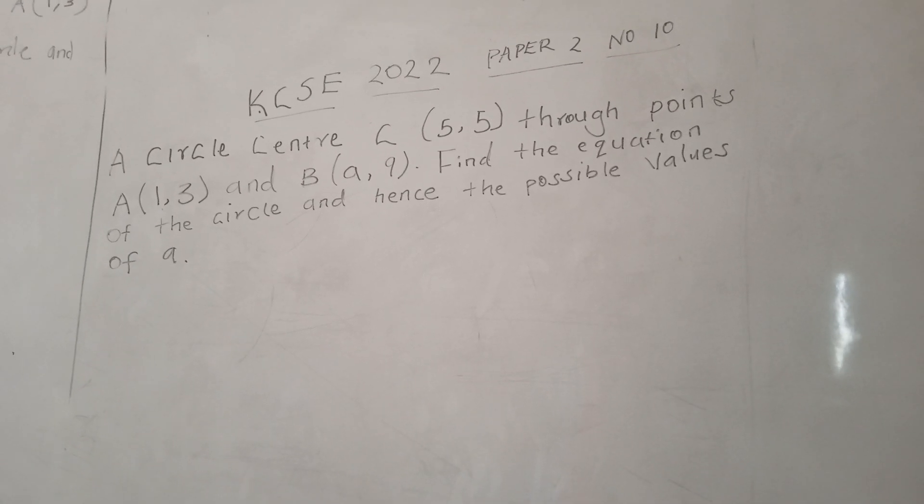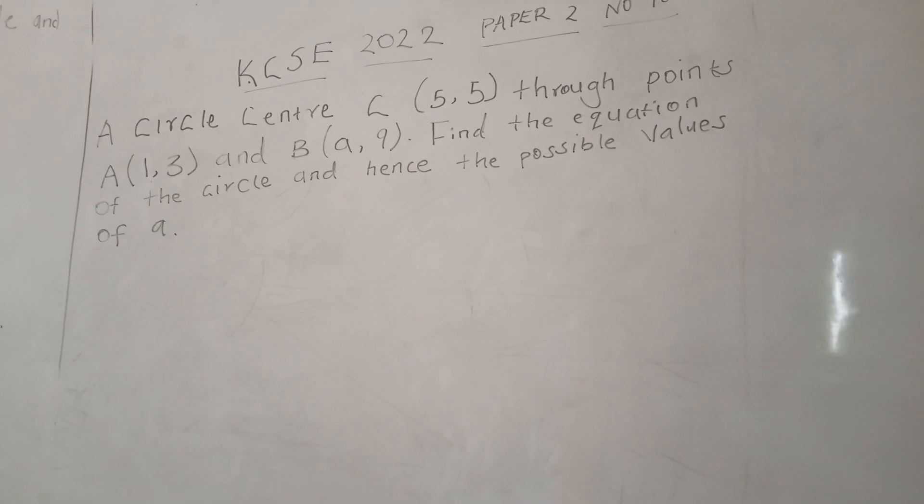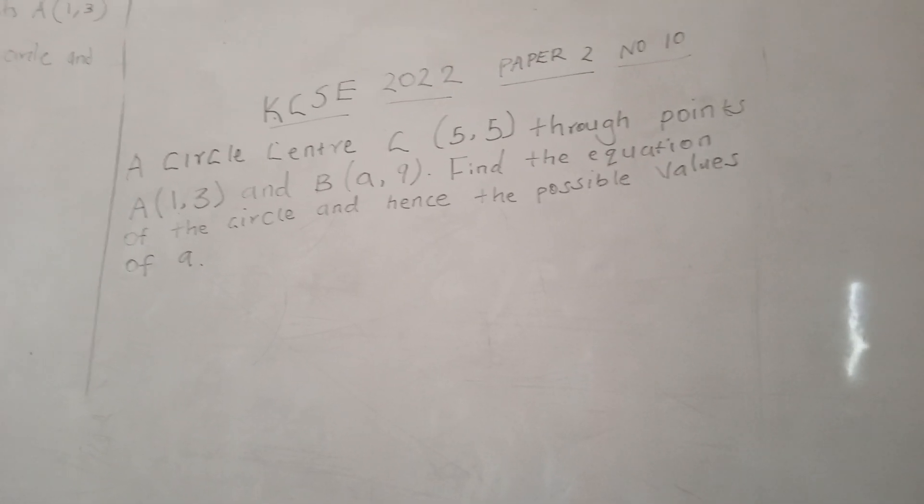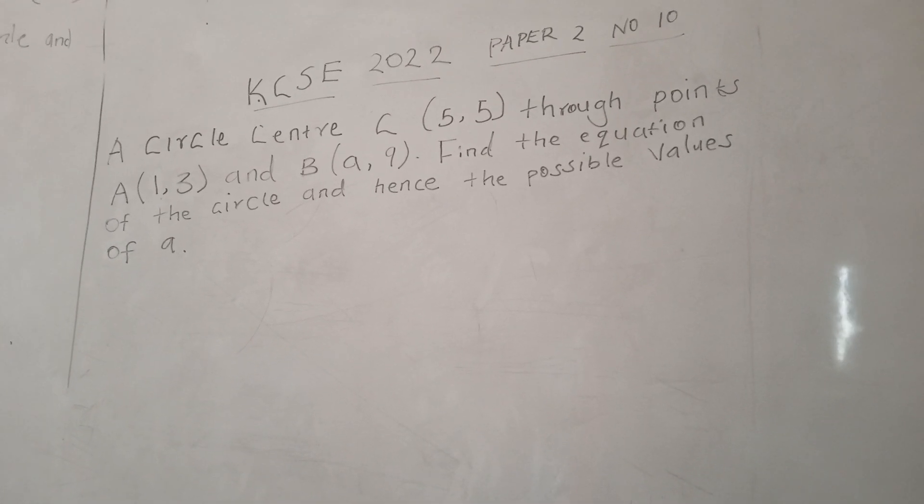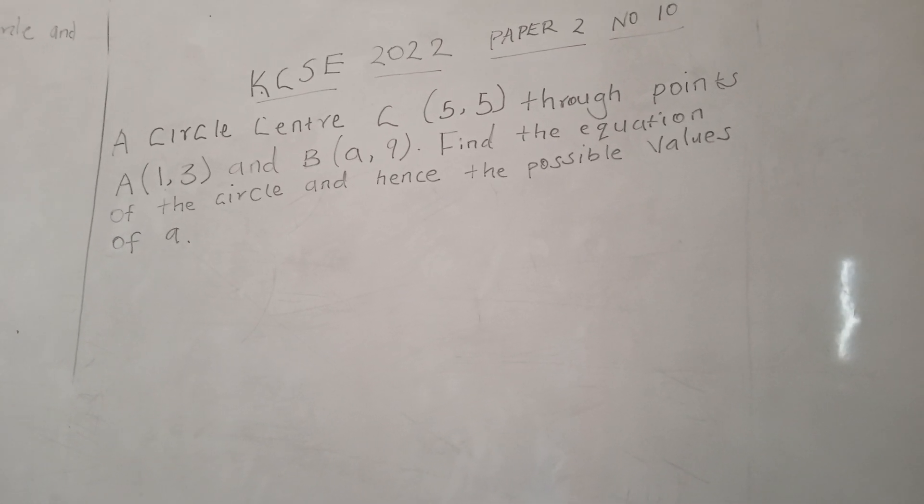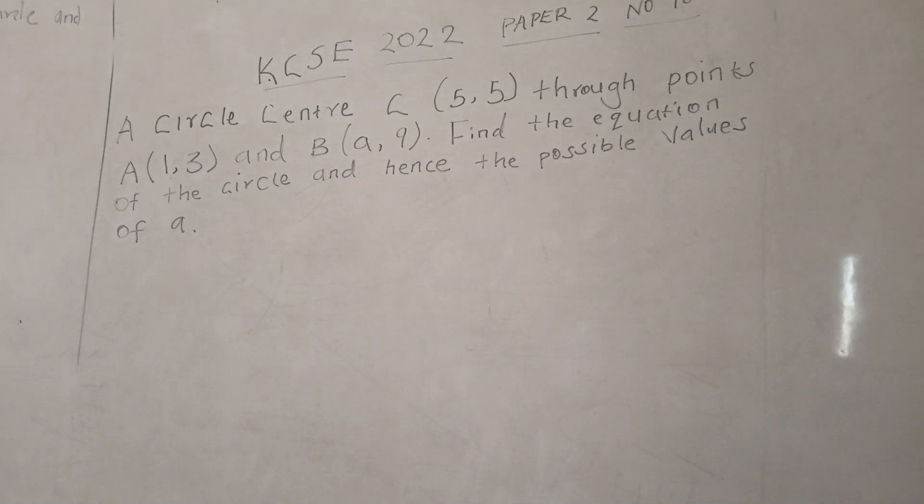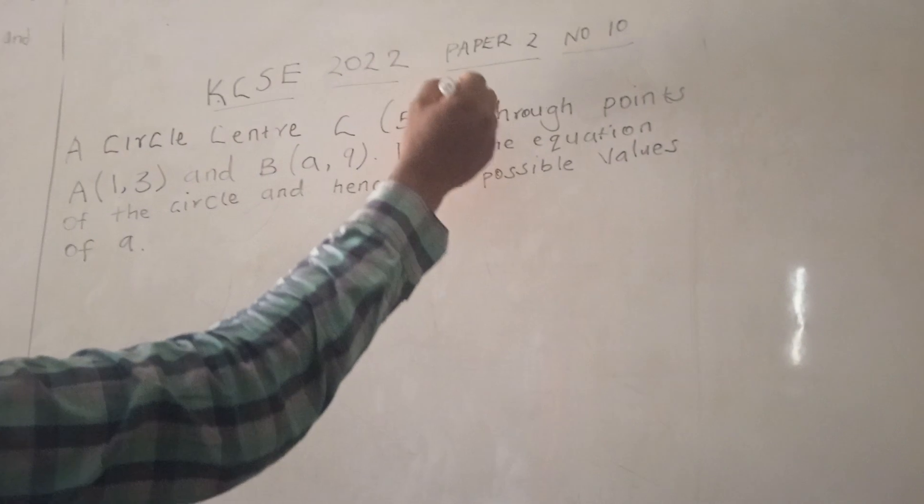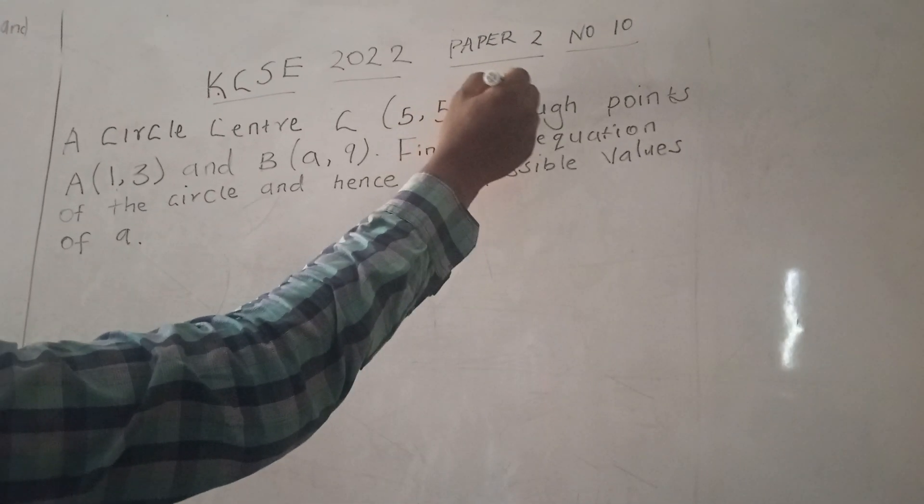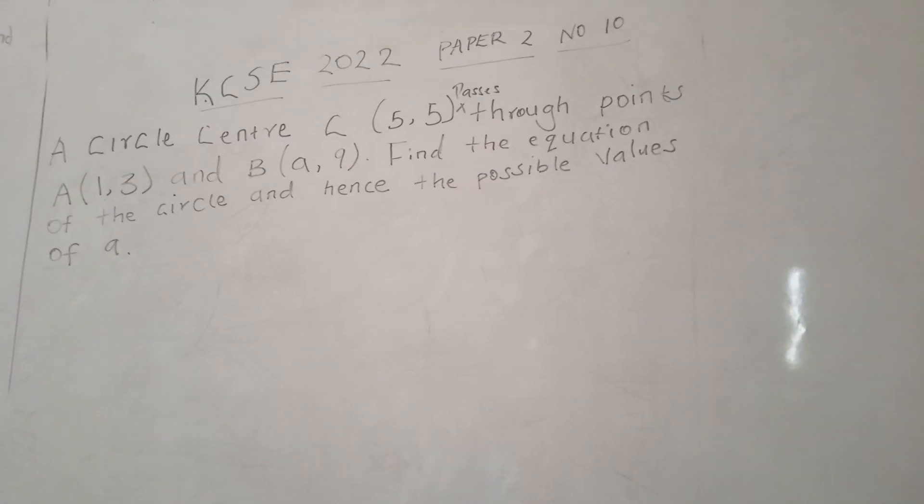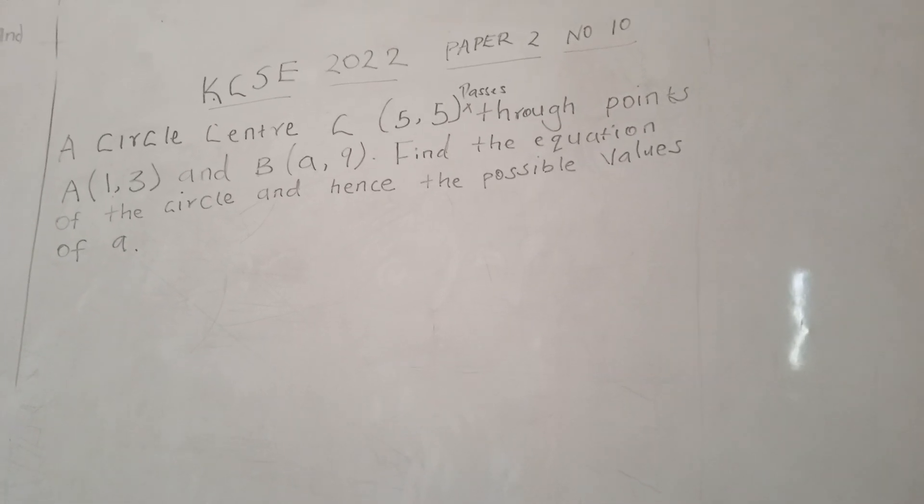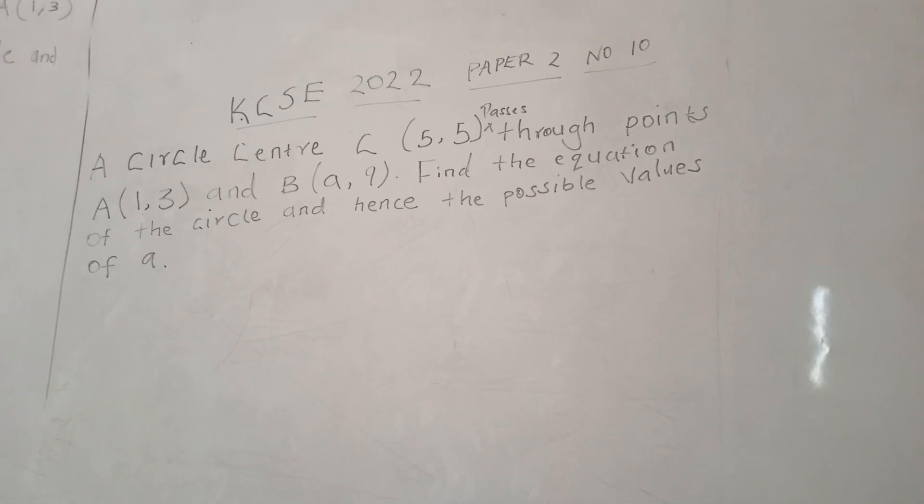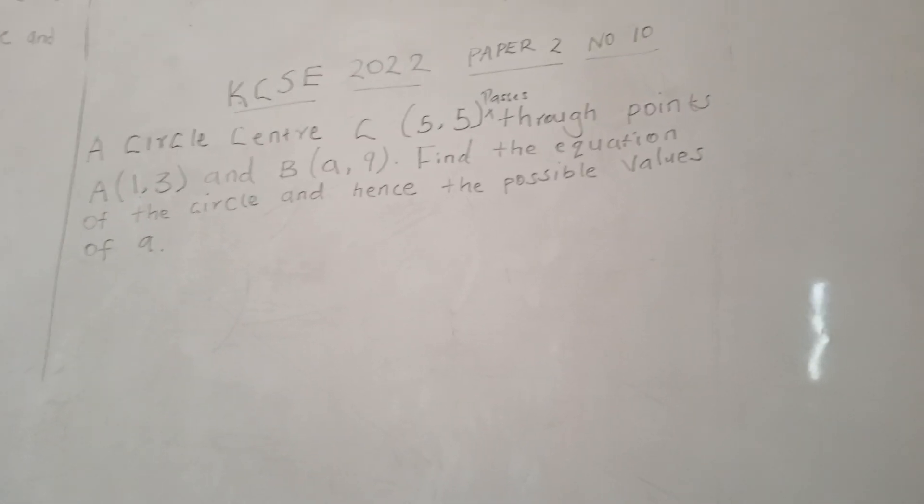Today we are going to focus on question 10. The question reads: a circle center C(5,5) passes through points A(1,3) and B(a,9). Find the equation of the circle and the possible values of a.